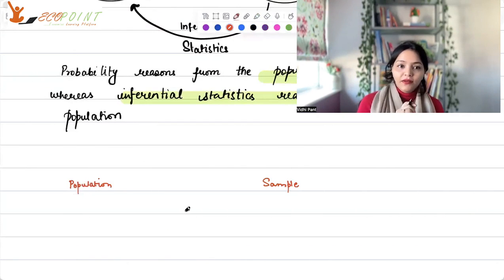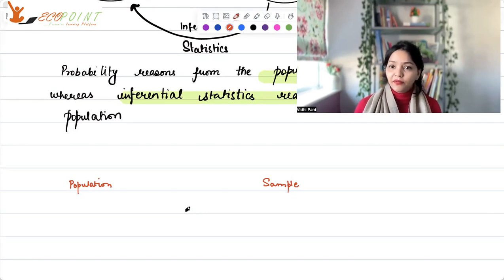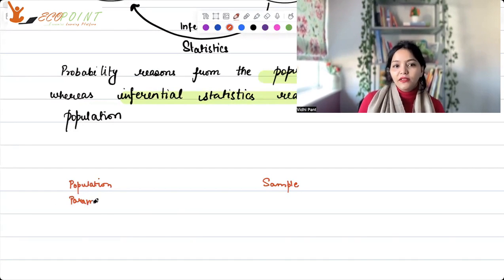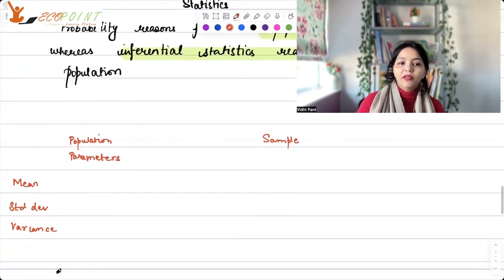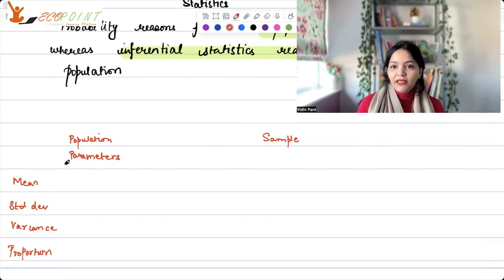In making these inferences, there are three kinds of procedures usually used: point estimates, confidence interval estimations, and hypothesis testing. Probability reasons from the population to the sample, whereas inferential statistic reasons from the sample to the population. Now, some notations. Whenever you are talking about population, the characteristics that we were talking about from population, those are called parameters.